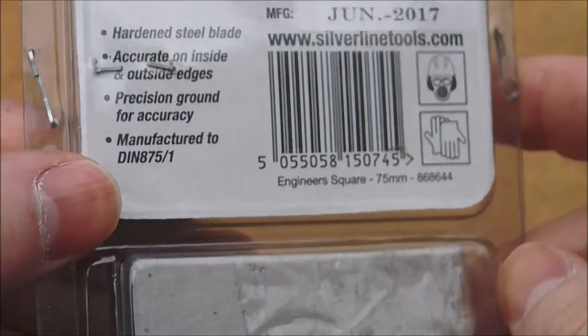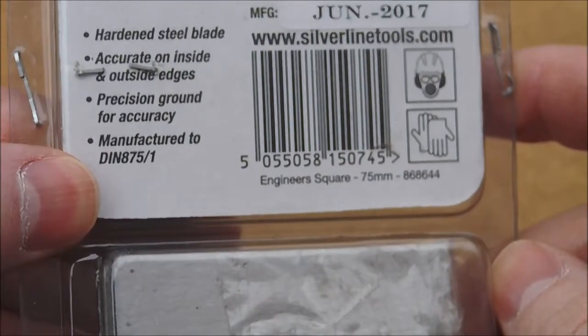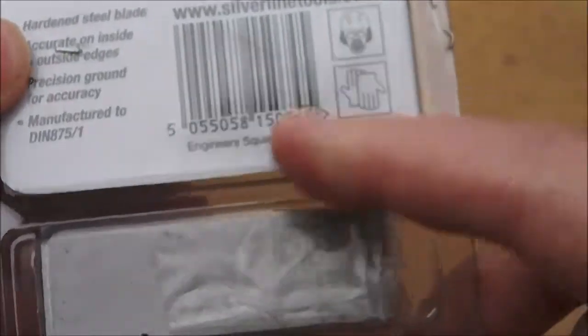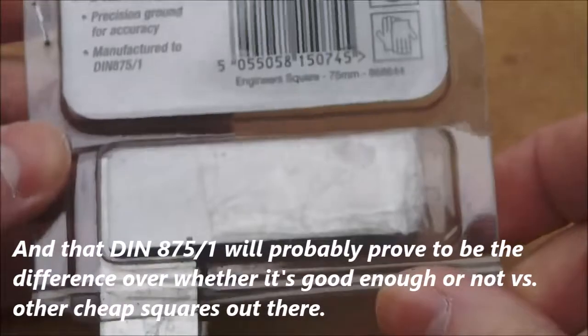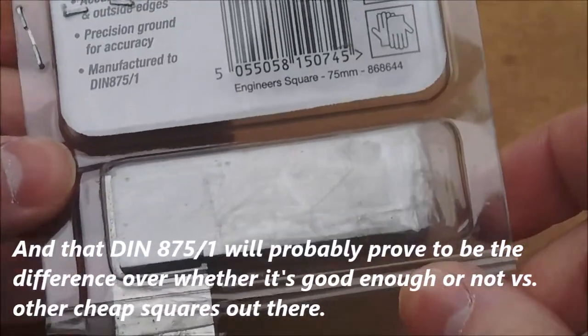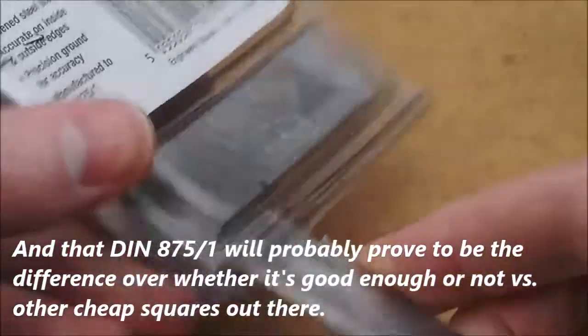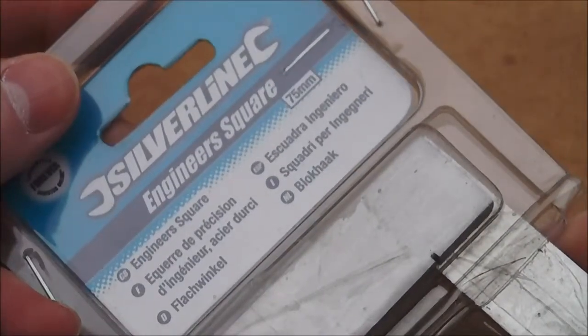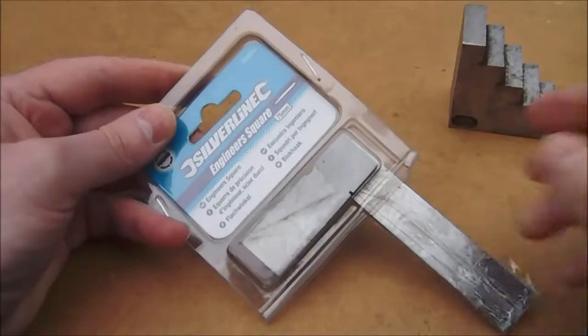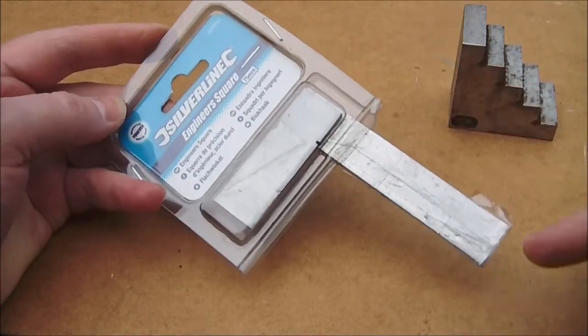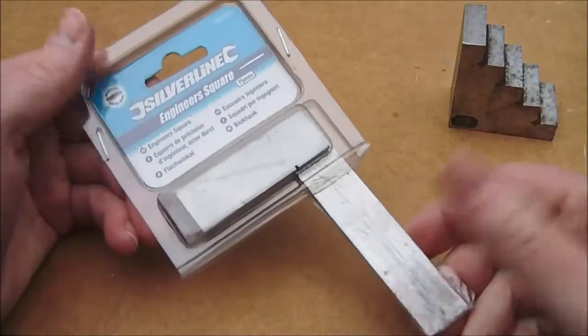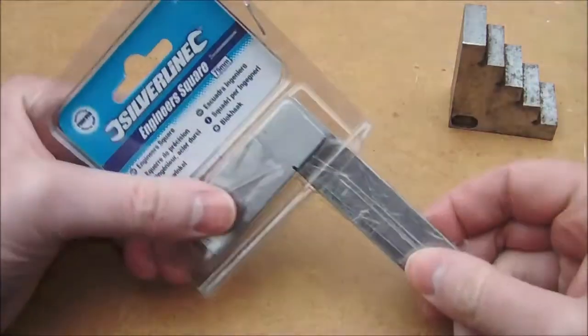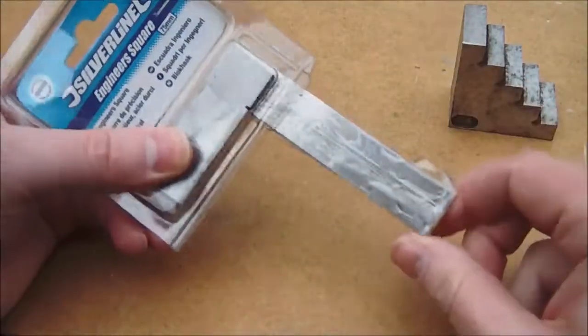They do different sizes in this exact same range. The one thing I will note is Silverline, I think you should have made the case a little bit longer and covered this end. On the rack it would be fine, but I'm talking about in transport. If this dangling piece here, which is the main measuring piece, is dangling and it's two pieces like I said before about dropping it from a height...